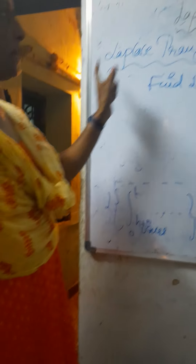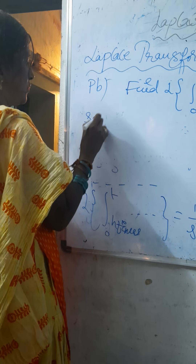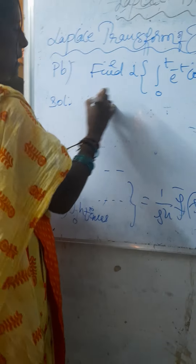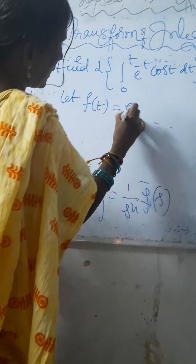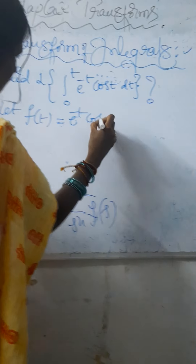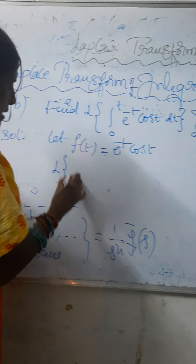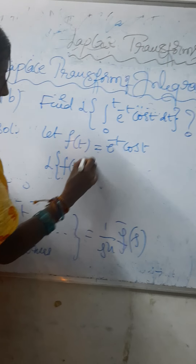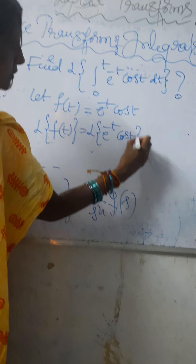Now solving this problem according to the Laplace transform of integrals: first of all, let f of t equals e to the power minus t times cos t. Now we have to find out the Laplace transform of f of t, that is, the Laplace transform of e to the power minus t cos t.